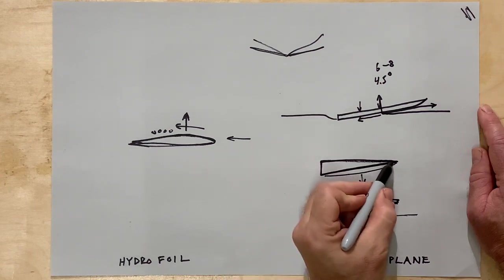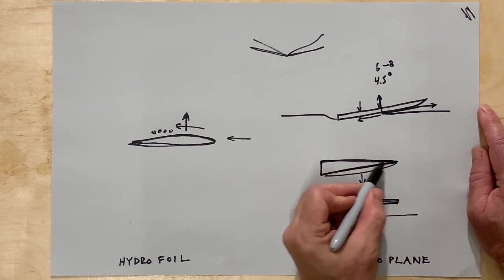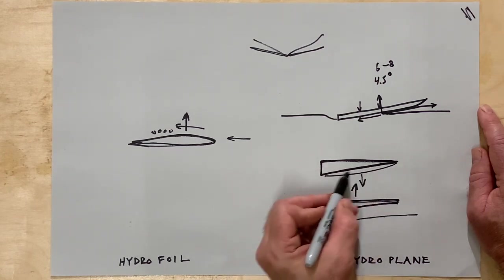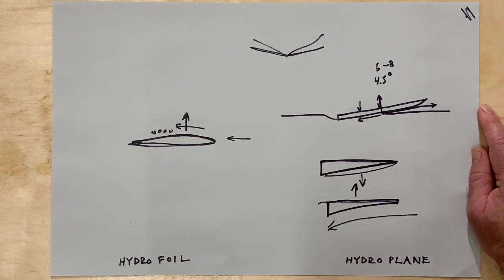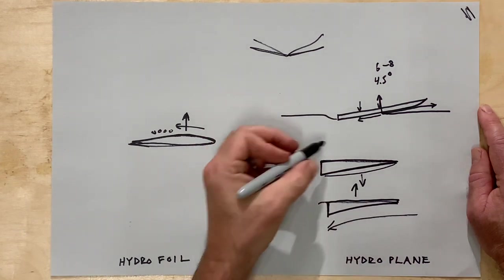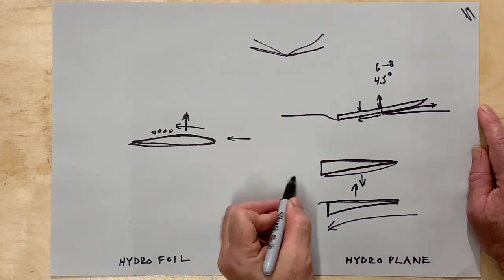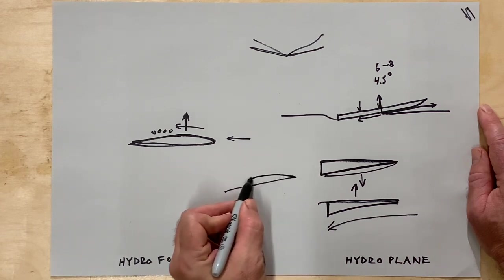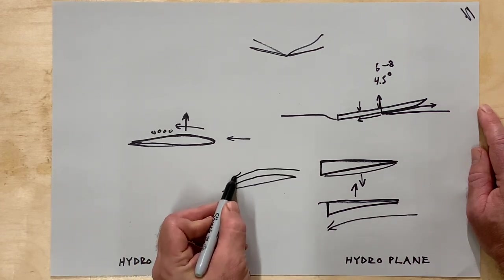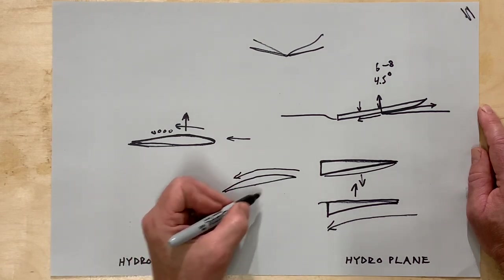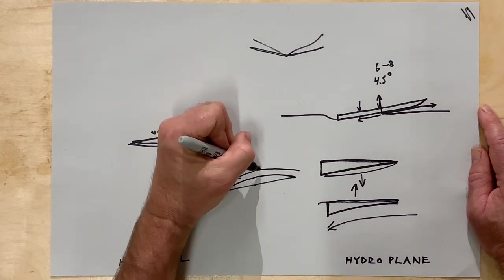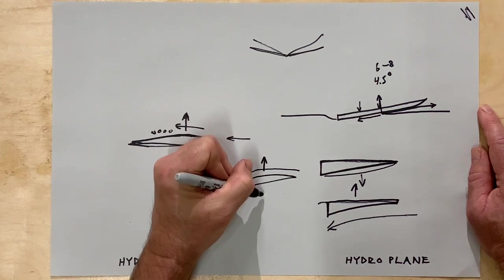The top you could put a curve on the top and that actually would, if the surface did go underwater, the top if this is flat and then this is curved, the Coanda effect would actually help lift it. So that would create lift on both surfaces if the hydroplane actually went underwater.